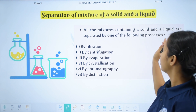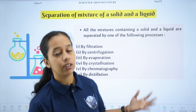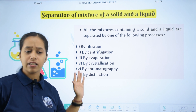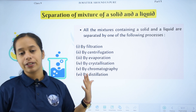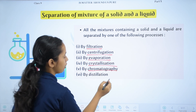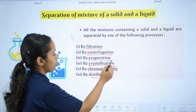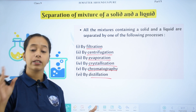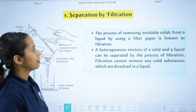Separation of a mixture of a solid and a liquid - all mixtures containing a solid and a liquid are separated by one of the following six processes. Depending on which method is most suited, we can choose any one and separate the mixtures. We have filtration, centrifugation, evaporation, crystallization, chromatography, and distillation. Let's start with the first topic: separation by filtration.